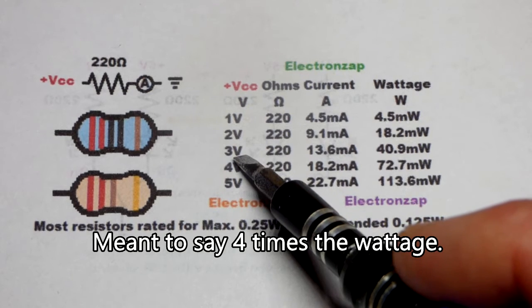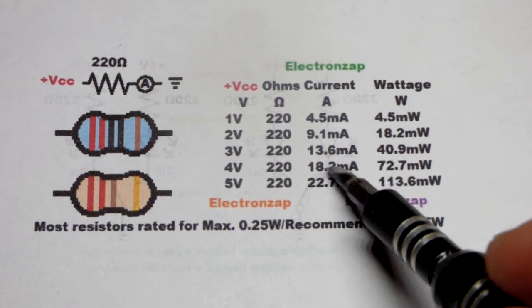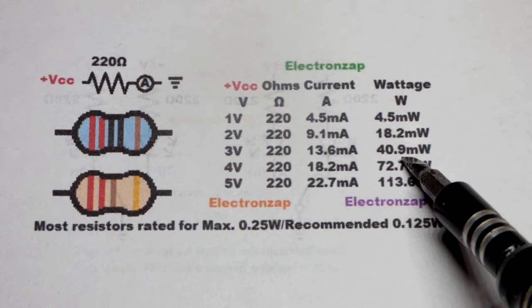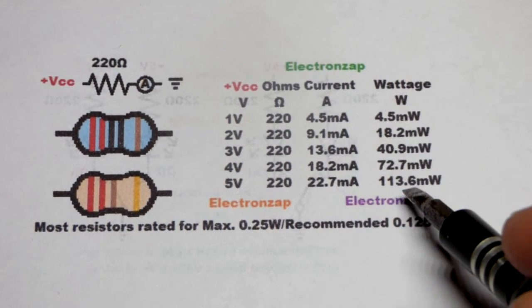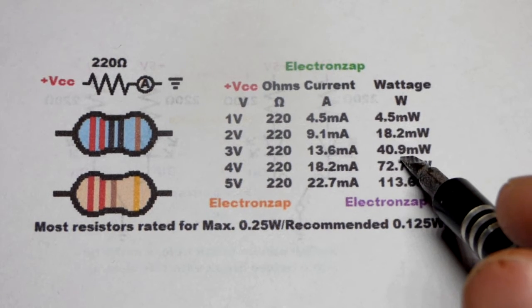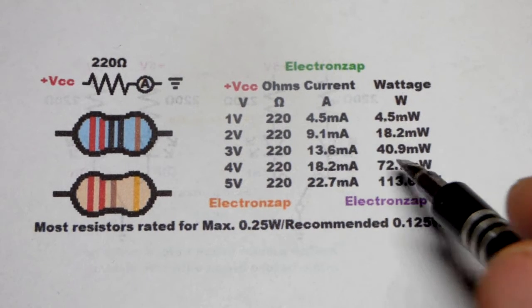3 times the voltage will get you 3 times the current, 9 times as much wattage. And so it goes up exponentially right there, much more quicker. So you got to be careful when you raise voltage.